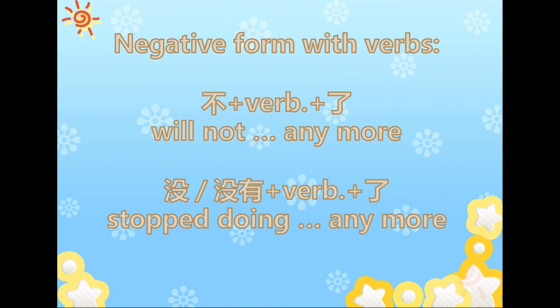Negative form with verbs has two situations. Situation one: 不verb了 means you will not do something anymore, will stop doing something. Situation two: 没 or 没有 verb了 means stopped doing something sometime in the past.